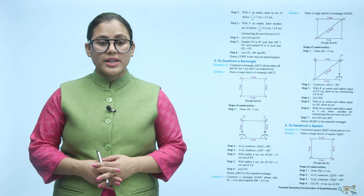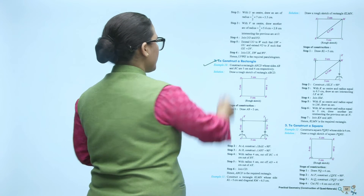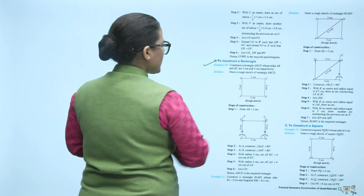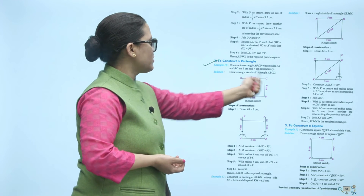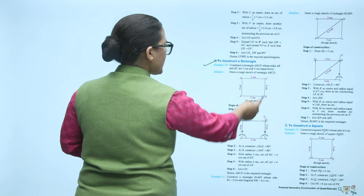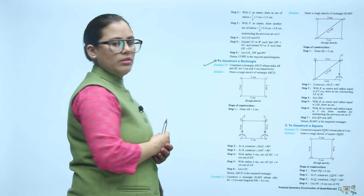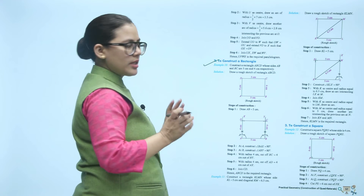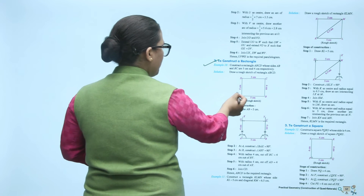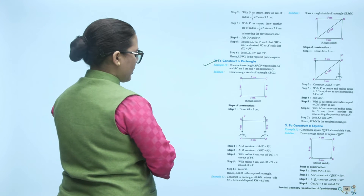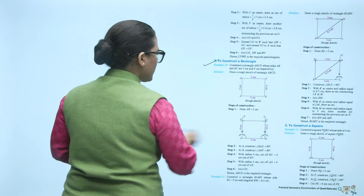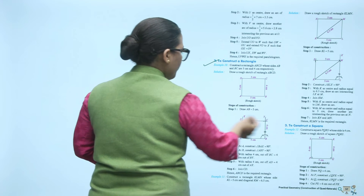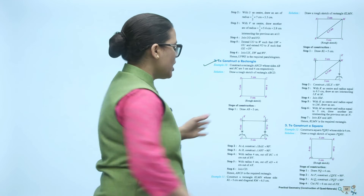To construct a rectangle ABCD: you have AB = 5 cm, so the opposite side CD is also 5 cm; and BC = 4 cm, so the opposite side AD is also 4 cm. First draw 5 cm. Since all angles of a rectangle are 90 degrees, make 90 degree angles at A and B, then from A draw an arc of 4 cm and from B draw an arc of 4 cm, and join to complete your rectangle.